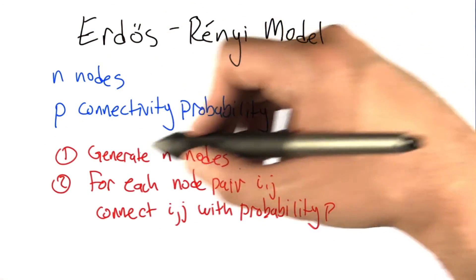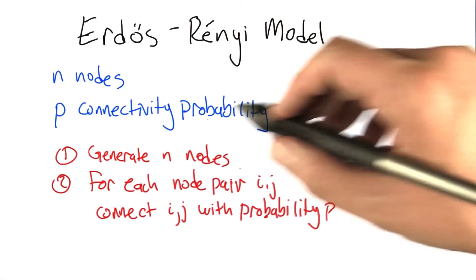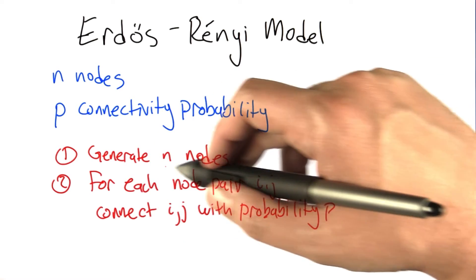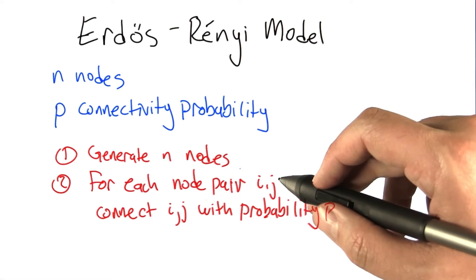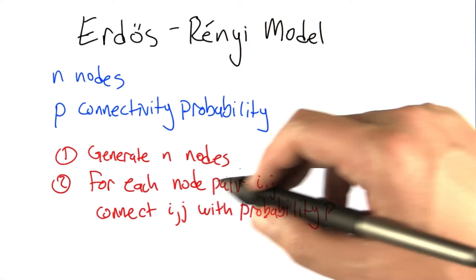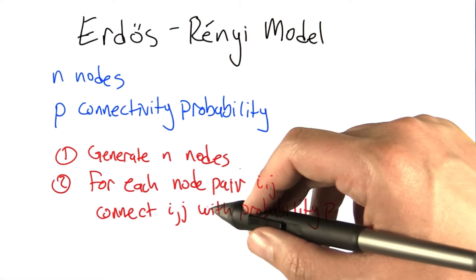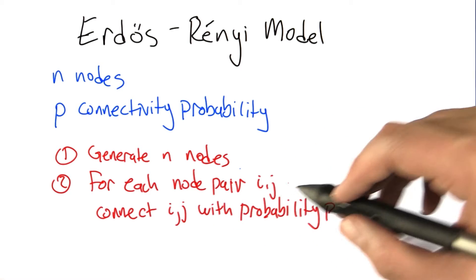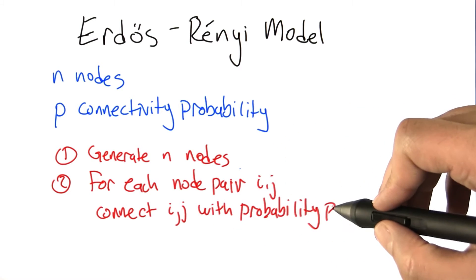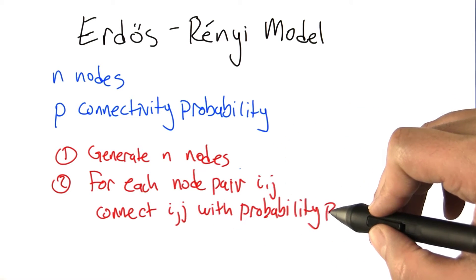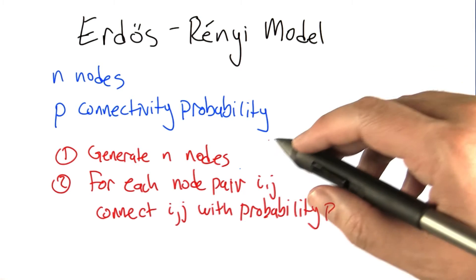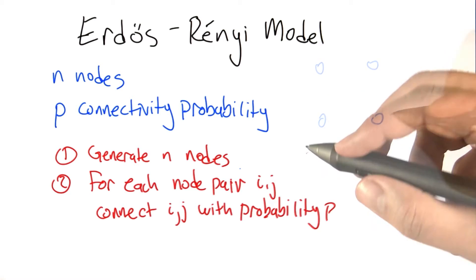We start off by generating a set of n nodes with no edges at all. Then we loop through all possible pairs of nodes i, j, and we connect i and j — but only after we flip a coin that comes up heads with probability p. If it does come up heads, we connect the pair; otherwise we don't.